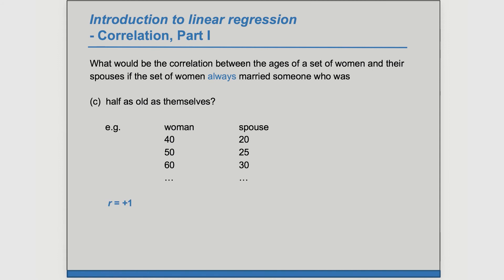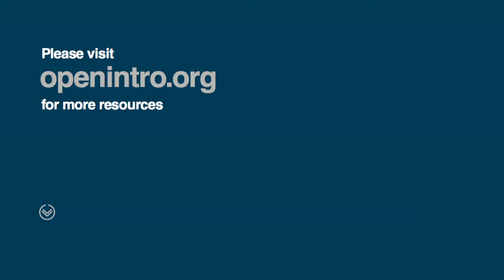So again, it's not whether one value is greater or less than the other — it's whether when one goes up, the other goes up or goes down. By asking ourselves that question, we can determine whether the perfect correlation is going to be positive or negative. That's it for this video. Check out more free resources on openintro.org.